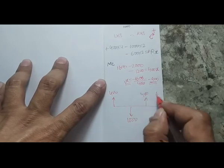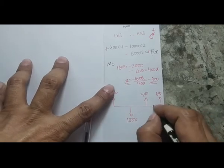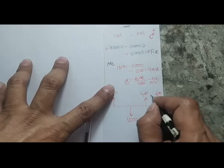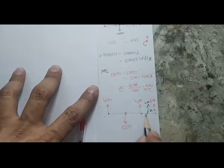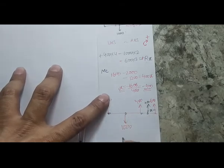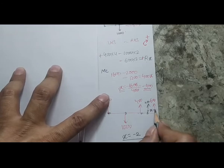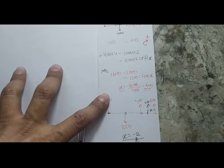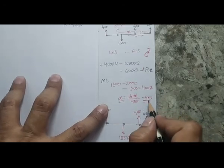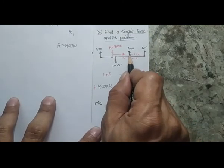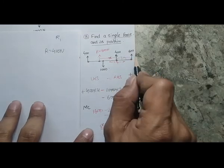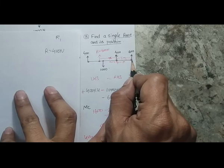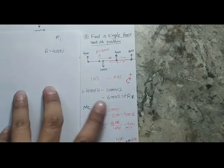As a cross-check: if you assume the resultant acts at a different reference point, the magnitude of position will differ but the actual force location remains the same. For example, taking X from point D gives X = −2 meters, meaning 2 meters to the right of D — the same physical location as 4 meters right of C.